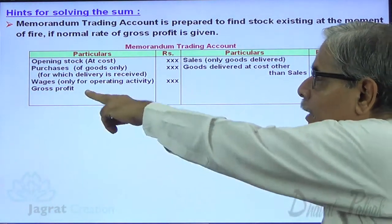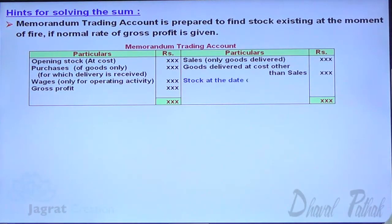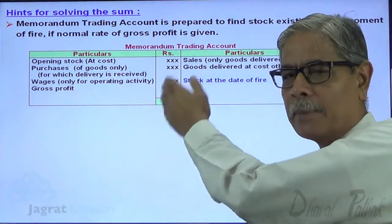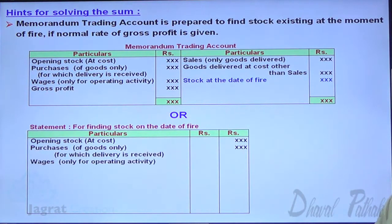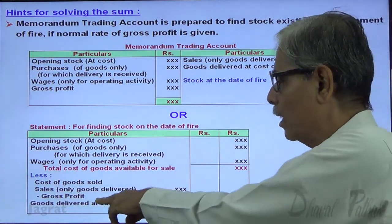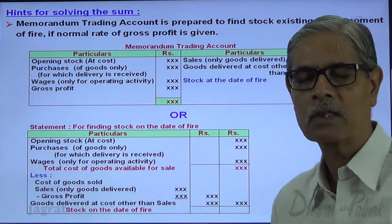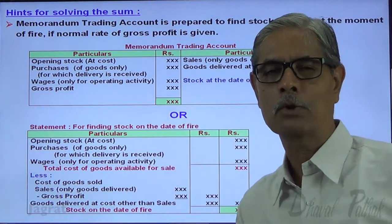Since the gross profit rate is available, sales multiplied by the gross profit rate gives us the gross profit amount. From the debit side total, if you deduct the credit side, you get the stock at the date of fire — the stock subject to risk of fire. This memorandum trading account can also be represented as a statement: opening stock plus purchases plus wages gives total cost of goods available for sale; deduct cost of goods sold (sales minus gross profit) and goods delivered at cost other than sales, and you get the stock that existed at the moment of fire. These are the two options available.